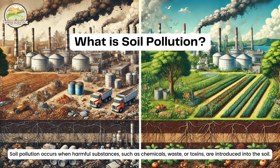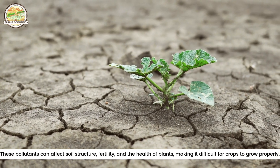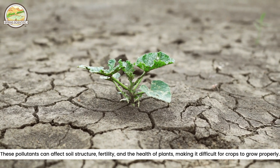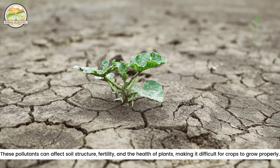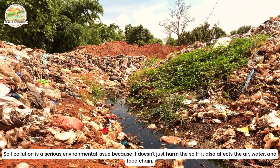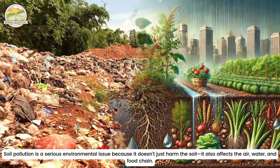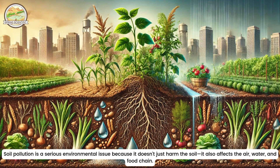Soil pollution occurs when harmful substances such as chemicals, waste or toxins are introduced into the soil. These pollutants can affect soil structure, fertility and the health of plants, making it difficult for crops to grow properly. Soil pollution is a serious environmental issue because it doesn't just harm the soil — it also affects the air, water and food chain.